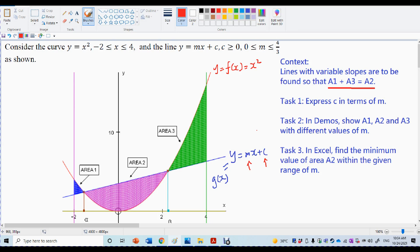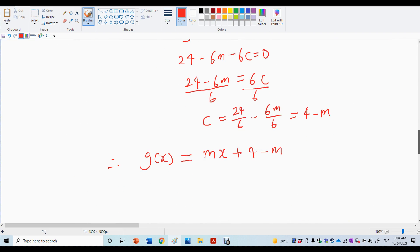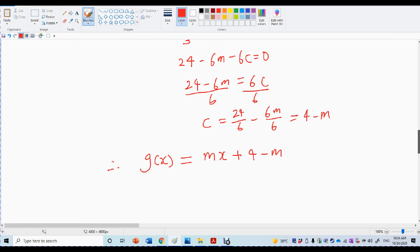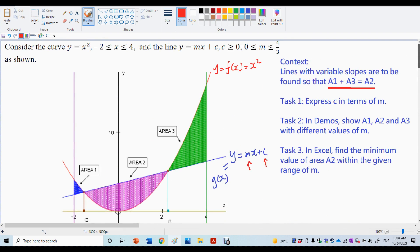Okay, so this is video 2 for integration for the area between two curves. In our last video we've done task 1, C in terms of M. If you still remember that C needs to be 4 minus M, so that A1 plus A3 will be A2. That makes sure the area above the straight line equals the area below the straight line.